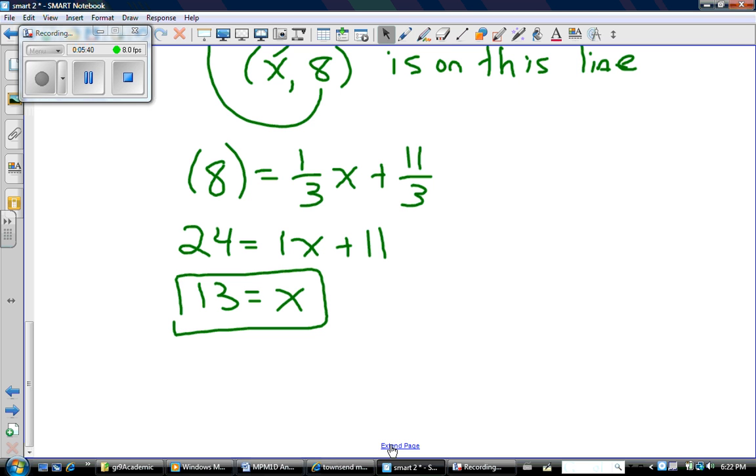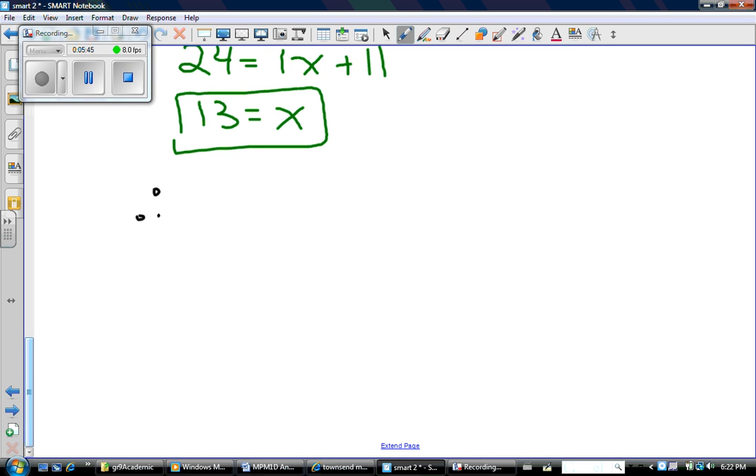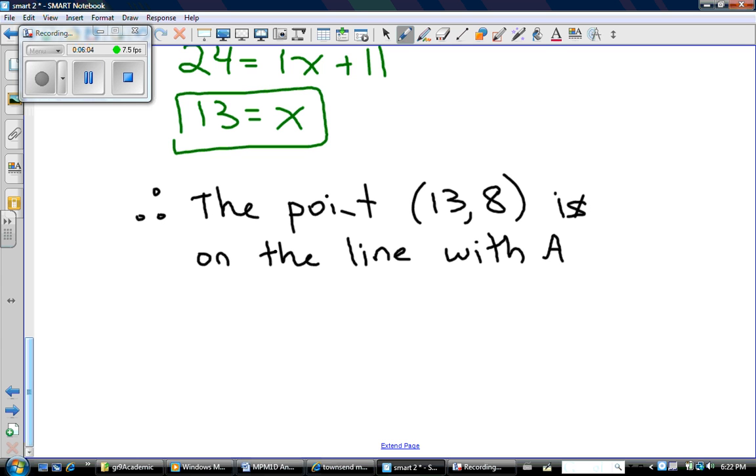And that means that the point (13, 8) is on the line with A and B. Of course, you'll be writing with proper pens, a little neater than me. But that's it. All done.